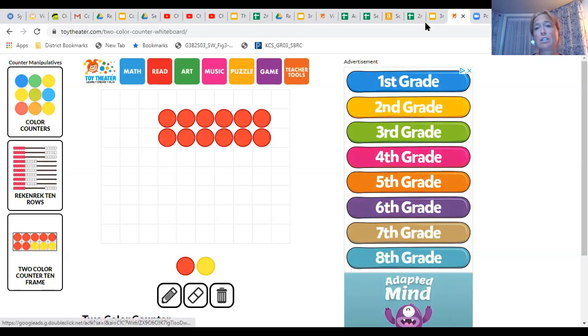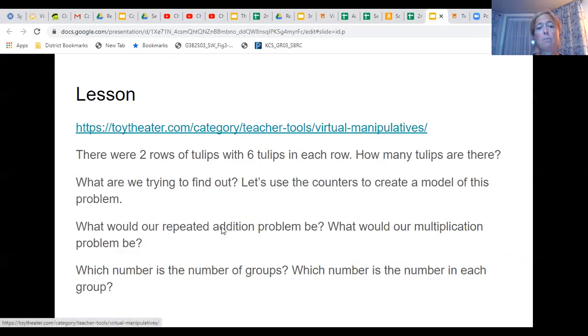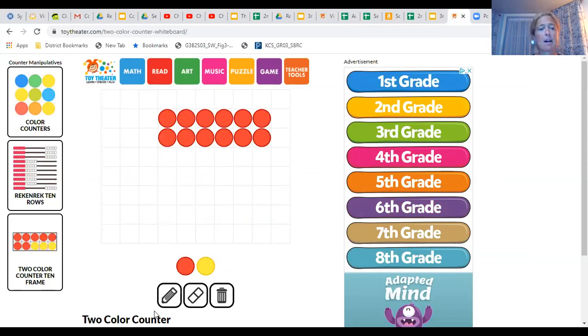Okay, so the next part of the question says, what would be our repeated addition problem? So let's go ahead and take a look at that next. What are we adding together when we're trying to find out how many tulips we have? We know that this is one group, and this is the other group. So it is like saying six plus six, and that is our repeated addition problem.